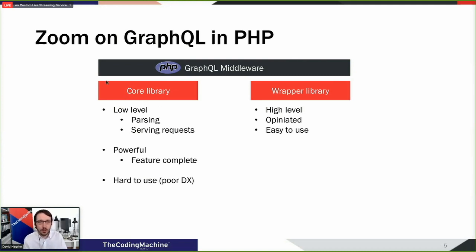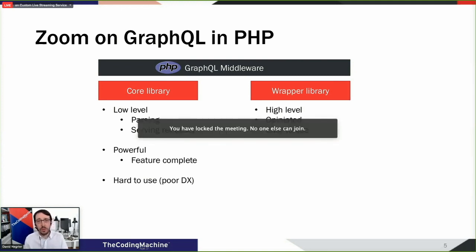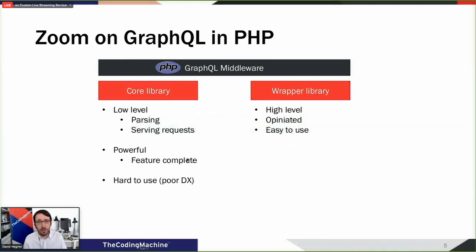If we look at PHP GraphQL middlewares, there are actually two kinds. I'll split them into two sections: core libraries and wrapper libraries. Core libraries are middlewares that are quite low level - they parse GraphQL queries and serve responses in JSON. They are really powerful, but they are kind of hard to use. The developer experience with such a library is quite poor.